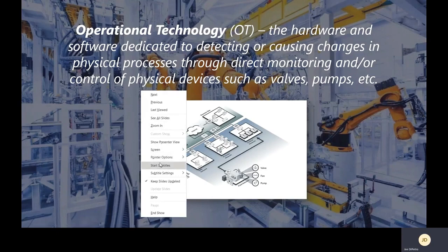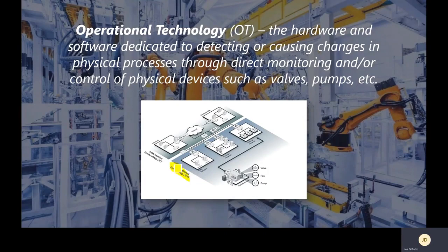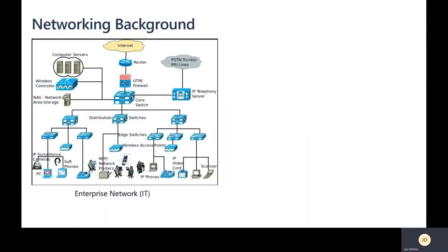As you see in this diagram, there are two different components: the operational technology network and the IT information technology network, with a boundary between the two. In the OT environment, we're concerned about valves, fans, pumps, and in the IoT world, different sensors. Looking at it from a networking perspective, traditional IT networks have built up switches, firewalls, UTM devices, and routers connecting out to the internet and into the cloud. Within the IT network, you have IP phones, scanners, printers, cameras, and surveillance, as well as compute and storage at the data center level — wireless controllers, network attached storage — all elements of the IT network.